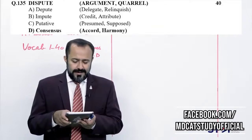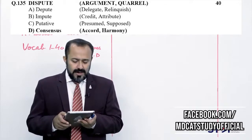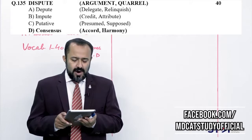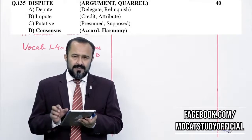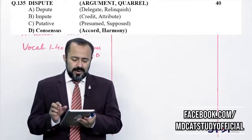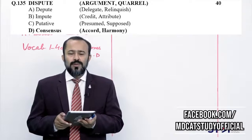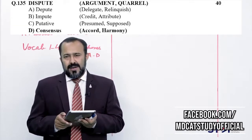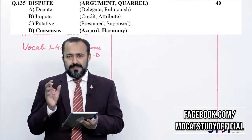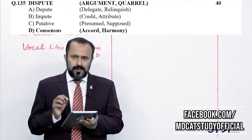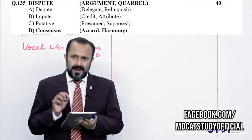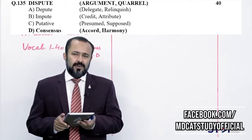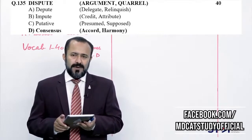Last antonyms question: dispute — کسی کے ساتھ جھگڑا کرنا — یہ یہاں noun کے طور پہ ہے۔ Correct answer بھی noun ہے — Delta (consensus) — اتفاق رائے۔ Dispute کا مطلب عدم اتفاق رائے اور consensus کا مطلب اتفاق — تو یہ exact antonym ہوا، Delta is the correct answer.